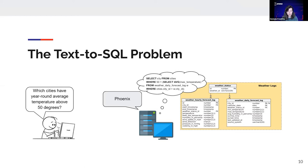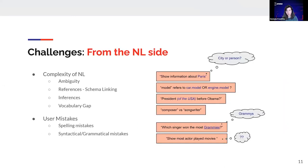The text-to-SQL problem is among the most challenging. From the natural language side, we deal with ambiguity. For example, when we ask 'show information about bodies,' do we mean the city or the person? Or 'show me information about the model' — do we refer to the car model or the engine model, both of which exist in the database? Other complications arise when the question implies information not obvious in the query, for example when querying about presidents before Obama — the information about the US president is not stated explicitly but is implied, and the system must understand this missing information.